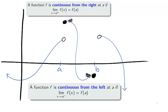In this graph, the function is continuous from the right at x equals a, but is not continuous from the right at x equals b. The function is continuous from the left at x equals b, but is not continuous from the left at x equals a.